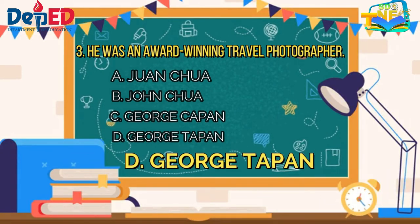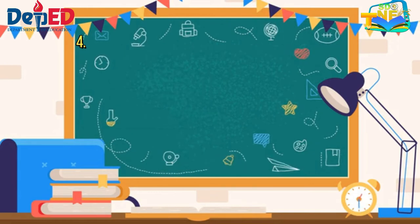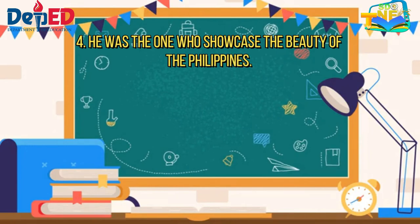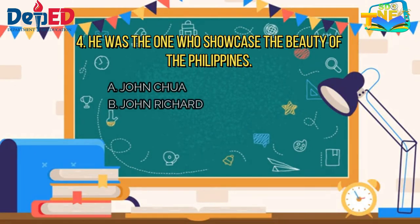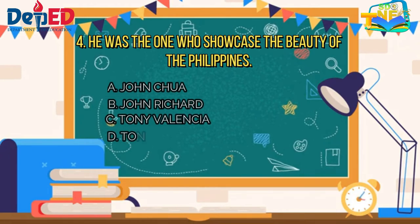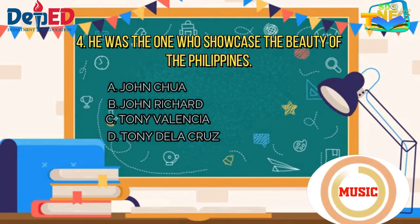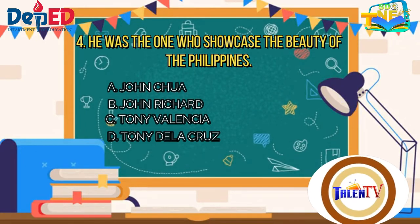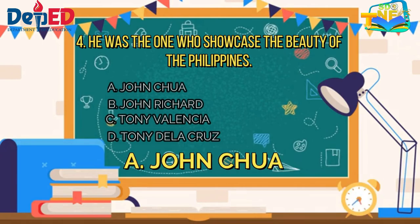Number 4: He was the one who showcased the beauty of the Philippines. A. John Chua, B. John Richard, C. Tony Valencia, D. Tony de la Cruz. The correct answer is letter A — John Chua.